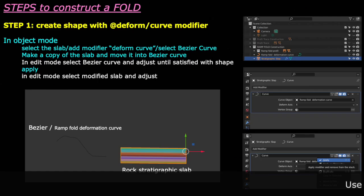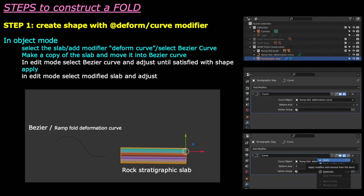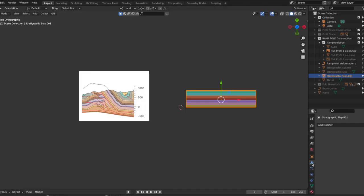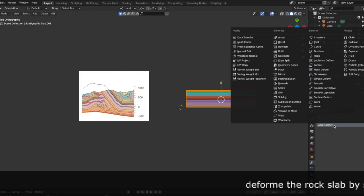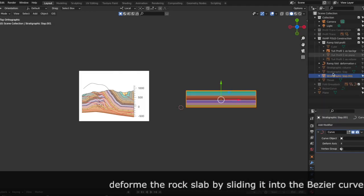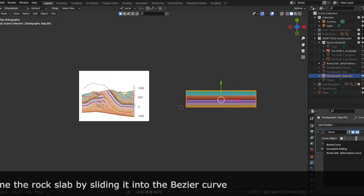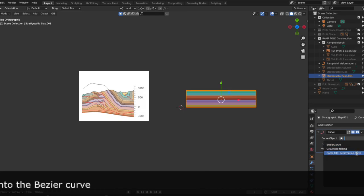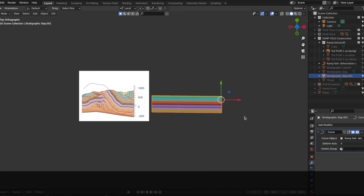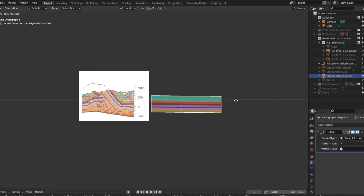Now we are going to execute the modifier deform with a curve following the steps shown in this slide. Make a copy of the rock slab. Select the rock slab in object mode. Go to the modifier tab and select deform with a curve. Choose the bezier curve you just created as the curve and slide the rock stratigraphic slab into it.